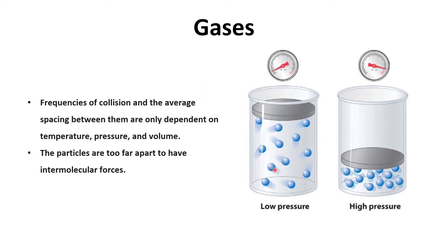The frequency of collisions between particles and with the container walls depends on temperature, pressure, and volume. Increasing temperature gives particles more energy, increasing collisions. Increasing pressure compresses the particles, also increasing collisions. Increasing volume spaces the particles further apart, reducing the number of collisions. Gas particles are too far apart to have significant intermolecular forces, which remain at a minimum.